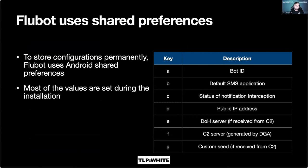FluBot uses shared preferences to store data permanently on the phone. Most of the options are set during installation — when the user first starts the malicious application, these are generated and stored. The four main ones are: bot ID, default SMS application, status of notification interception, and public IP address. The notification interception status comes from the C2. FluBot also has the ability to intercept SMS messages — if the user receives an SMS, it won't be shown to them but will instead be delivered to the attacker through the C2 channel. This gives the application the capability of bypassing MFA, for example.